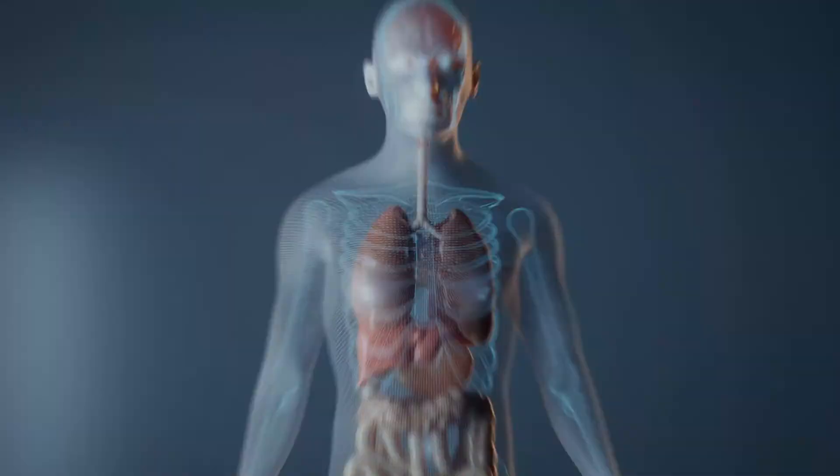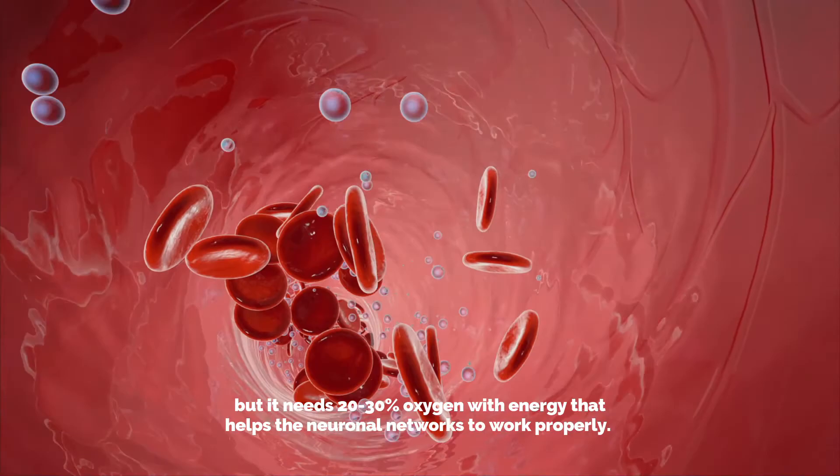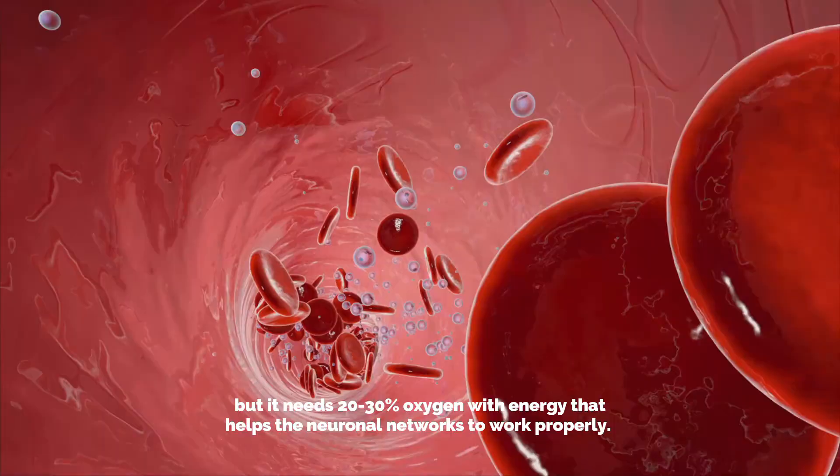The human brain is one to three percent of the total body mass, but it needs twenty to thirty percent oxygen with energy that helps the neuronal networks to work properly. No scientists or researchers can thoroughly explain the idea of how thoughts are formed in our brains.